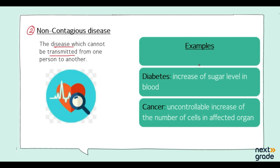An example of a non-contagious disease is diabetes. In diabetes, the sugar level in the blood increases. Common symptoms include feeling very thirsty, feeling very hungry, and significant weight loss.